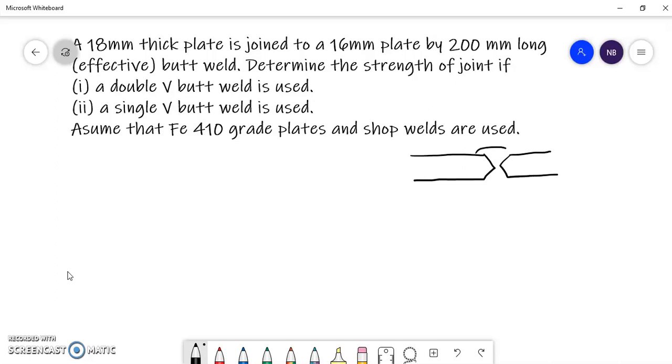The first case, we are asked to connect these two by a double V joint, and in the second case we are asked to find out the design strength if it is only connected using a single V weld.